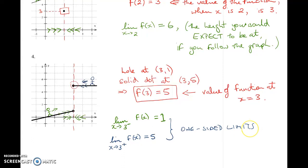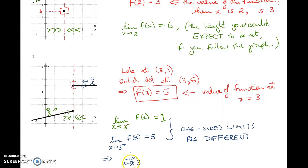If, as in this case, you approach the given x value at two different heights, the conclusion is that the limit does not exist. These are the one-sided limits and they are different from one another — they're not in agreement. When we're approaching the red line at two different heights, the limit as x approaches 3 — not using pluses or minuses, because we're talking about the overall limit, not the one-sided limit — the limit as x approaches 3 does not exist.